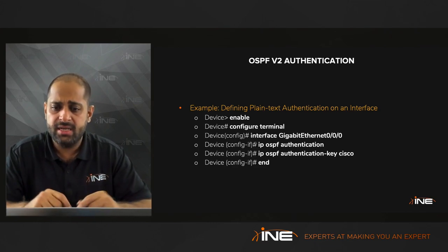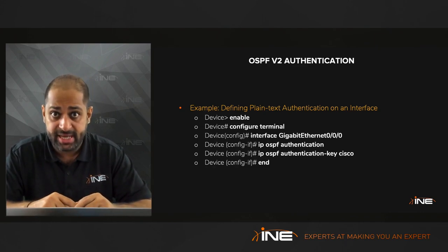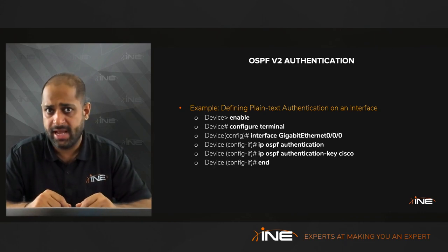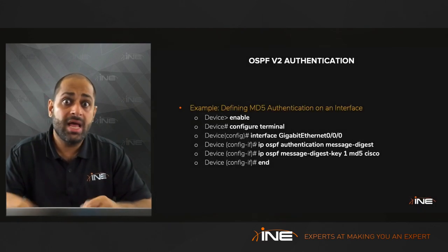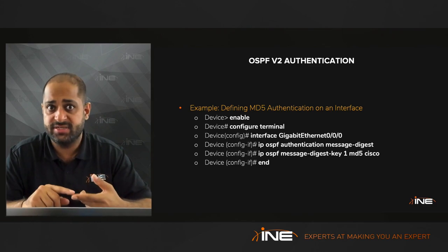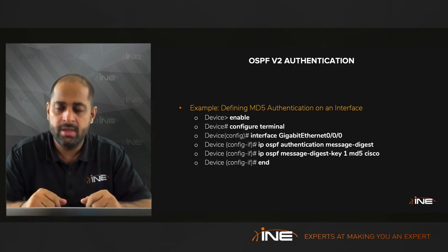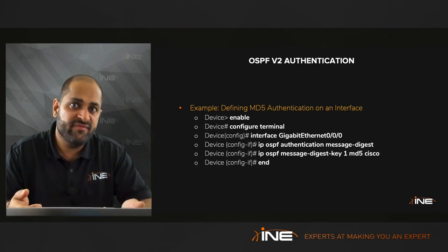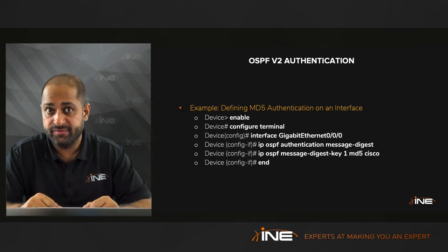Step 2 is to define the password, which must be done under the interface — it cannot be done globally. The command for a clear text password is 'IP OSPF authentication-key' followed by the password. For MD5, the password is defined with 'IP OSPF message-digest-key 1 MD5' and then the password.